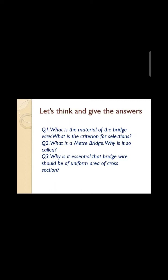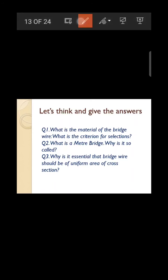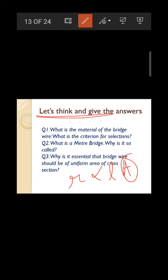Third question: Why must the bridge wire have a uniform area of cross-section? Because in the meter bridge derivation, resistance is taken as directly proportional to length (R ∝ L), which assumes area is constant. Also, the jockey should only be touched (not scraped) on the wire, because scraping could change the wire's area of cross-section.